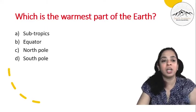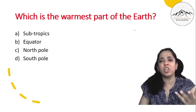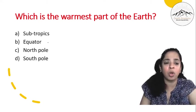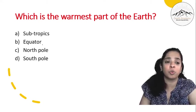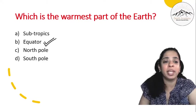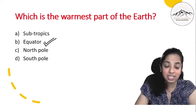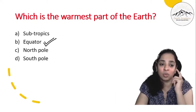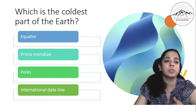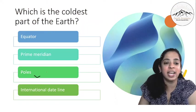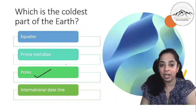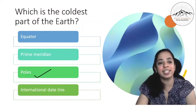Now which is the warmest part of the earth? It is a very logical question. Is it subtropic, equator, north pole or south pole? So obviously it will be equator because equator gets the most amount of light from the sun, it is closest. Which is the coldest part of the earth? Obviously it will be poles. So if you look at the options, obviously it will be poles.